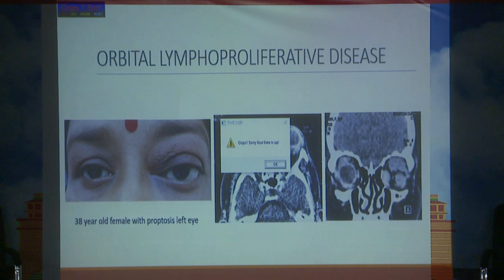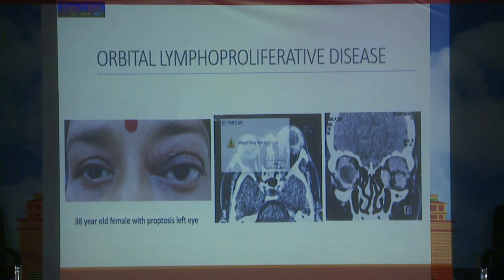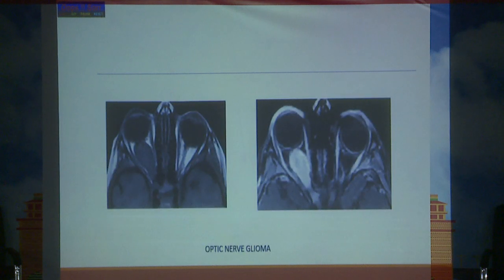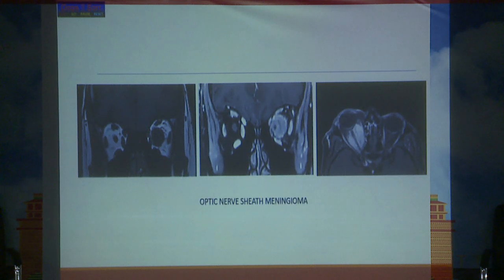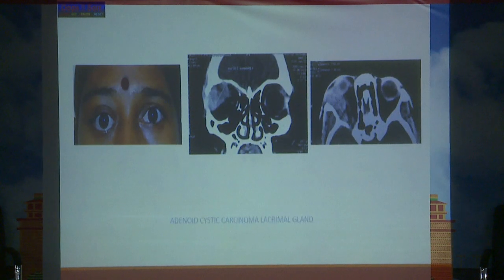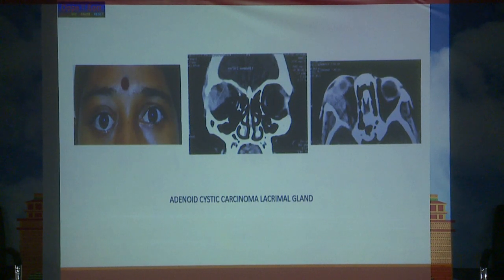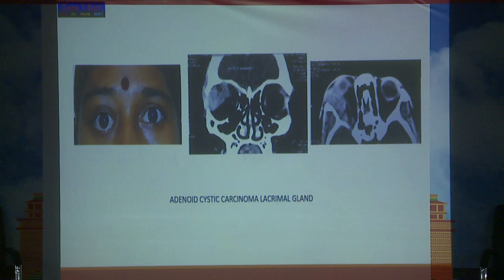In orbital lymphoproliferative diseases there is a dirty retroorbital area with a diffuse lesion. Optic nerve glioma appears as a well-circumscribed hyperintense lesion on MRI. Optic nerve sheath meningioma shows a tram-track appearance. In adenoid cystic carcinoma of the lacrimal gland there is diffuse swelling of the lacrimal gland with bony erosion, suggestive of malignant etiology.